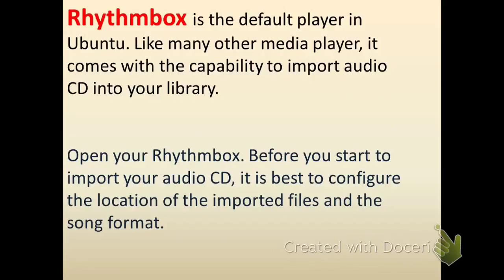We know that audio CDs are copyright protected, and ripping them is a very simple task to convert them into music files. Today we will use Rhythmbox, the native player in Ubuntu. To do this, first of all we need to configure Rhythmbox, specify the location of the music files, and also specify the song format. It is not a cumbersome task.